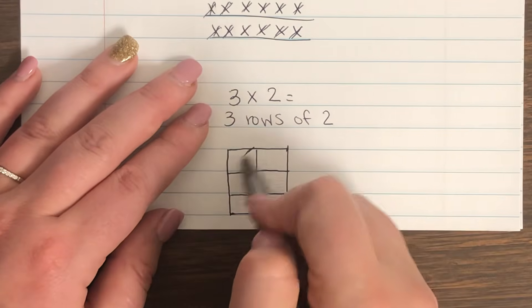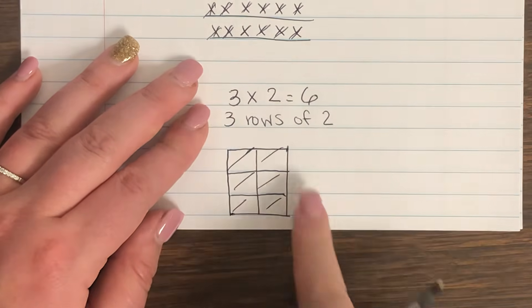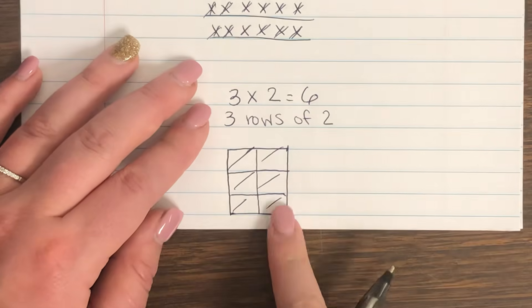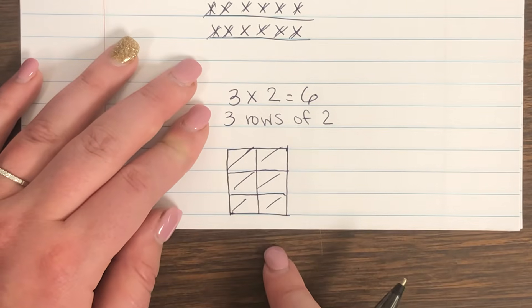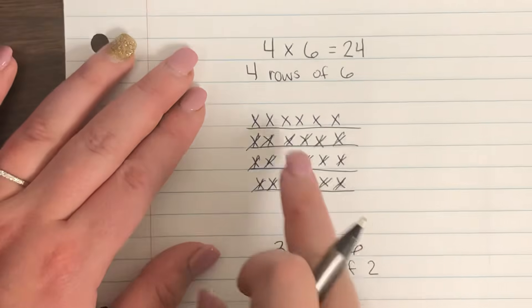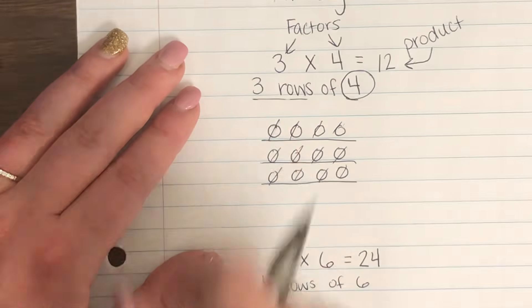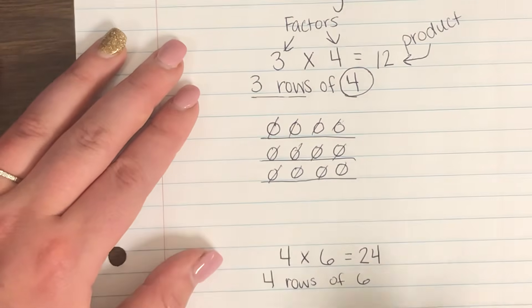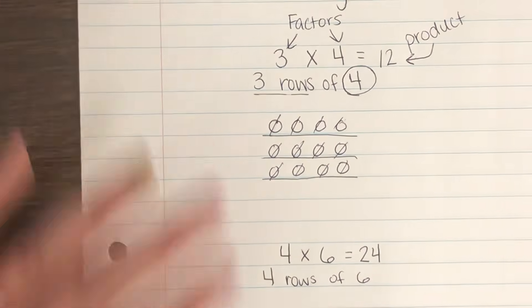The answer here is one, two, three, four, five, six. You can do it this way, but it's very complicated and I would not recommend it. I would recommend using the x's method or the dots method when trying to solve a multiplication problem. Good luck, guys!